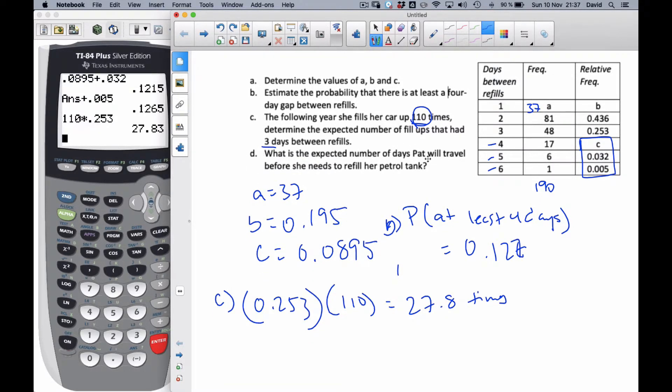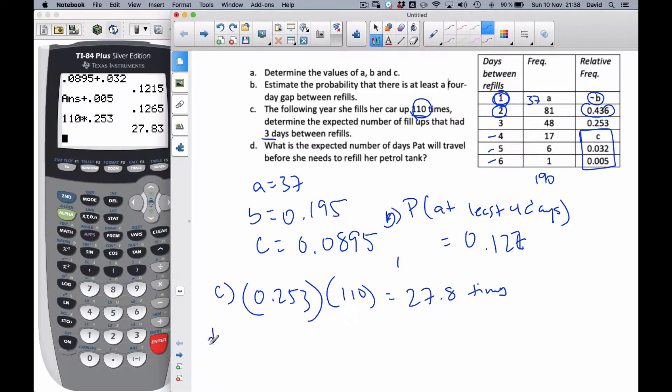And finally, D says, what is the expected number of days Pat will travel before she needs to refill her petrol tank? So now, going back to this original scenario, the expected number. Well, I know that each of these refill days has a probability associated with it. So if I want the expected numbers, I'm going to go 1 times B plus 2 times this. And so if I write this out, D part, the expected value, we'll call this X, will be 1 times this B value, which is 0.195 plus 2 times 0.436 plus 3 times 0.253 and so on, and then 6 times 0.005.